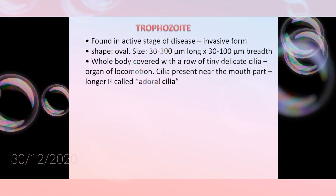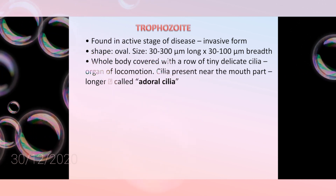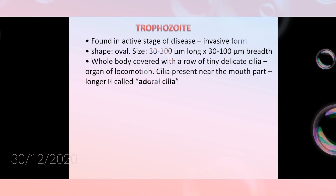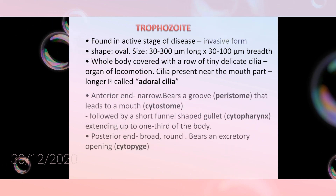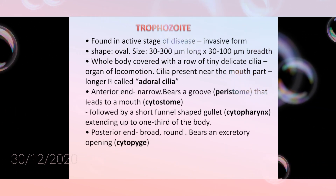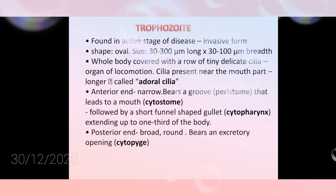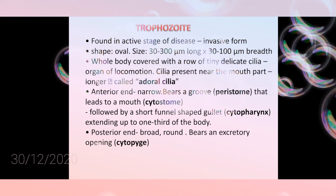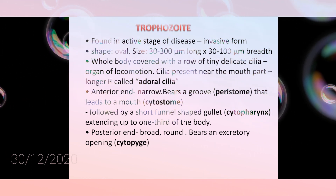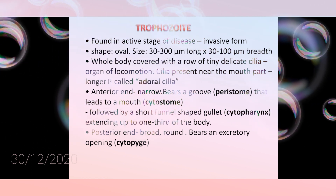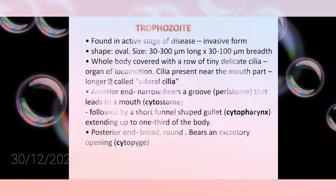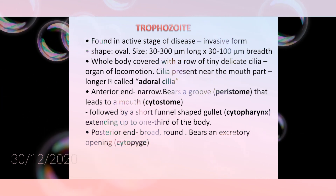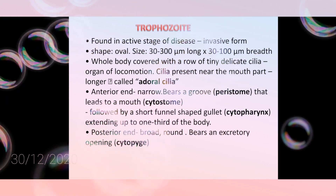The whole body is covered by cilia, and the cilia near the mouth are named adoral cilia. The anterior end bears a groove leading to the mouth known as the cytostome, followed by a short funnel-shaped gullet or cytopharynx. The posterior end is broad and round, bearing an excretory opening known as the cytopyge.